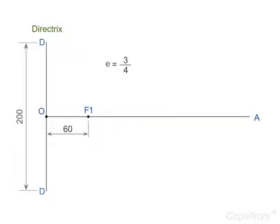The distance between the directrix and the focus is given as 60 mm. So mark a point F1 as focus on line OA such that OF1 is equal to 60 mm.